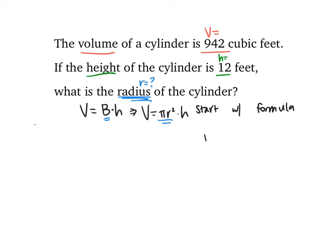From there, you're going to plug in your values, the ones that you're given. If the volume is 942, I'm going to plug that in for V. From there, I have π, I'm going to use 3.14. And then radius, that's what I'm looking for, so I have to leave that as r. And then my height, I'm going to plug in a 12.